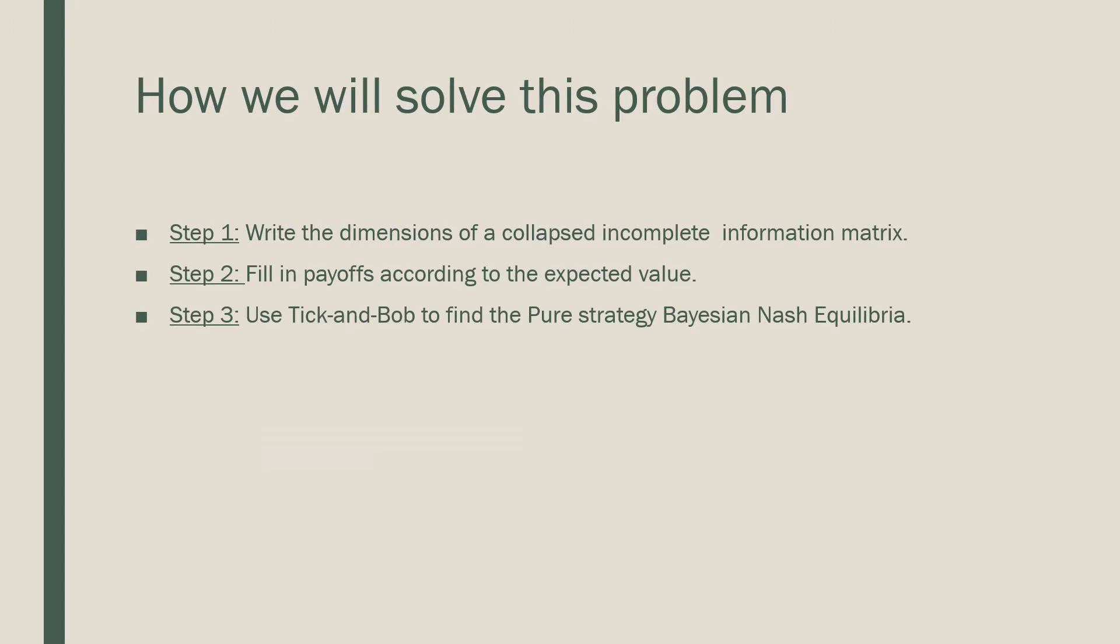We're going to follow three steps. Step one: write the dimensions of a collapsed incomplete information matrix, meaning we're writing this as a strategic form game. Step two: fill in the payoffs according to expected value. Step three: use the tick and bob method to find the pure strategy Bayesian Nash Equilibria.